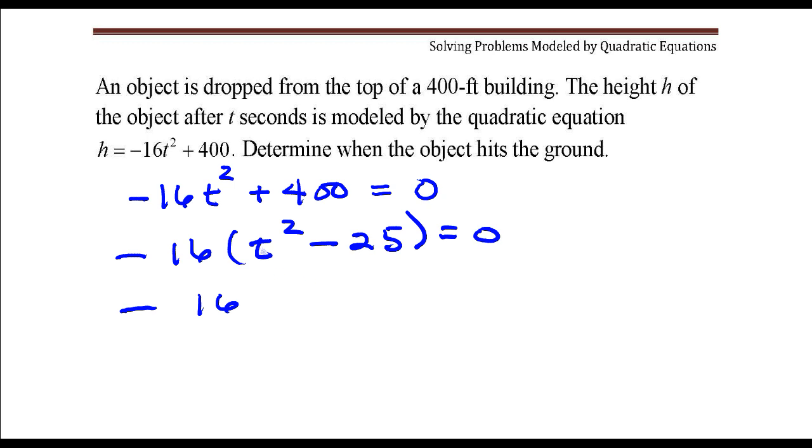And what we have here, t² minus 25, that is a difference of two squares, so we will go ahead and factor that. It can be factored into (t + 5) times (t - 5), and then we will take each of those factors, set them to zero, and solve each one.